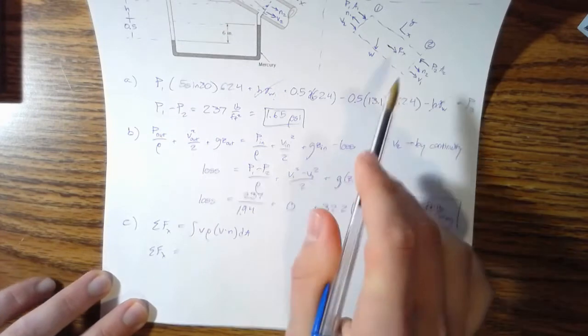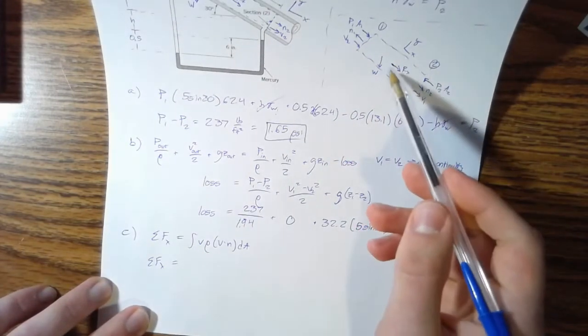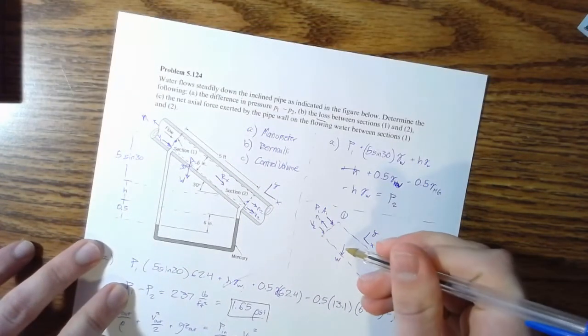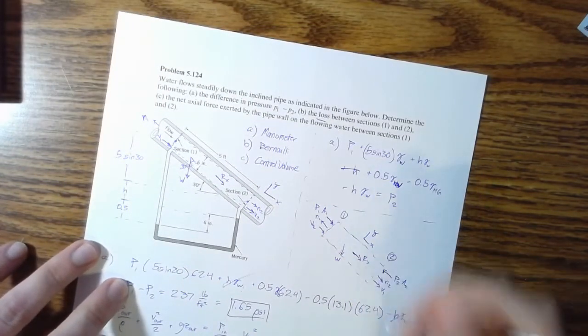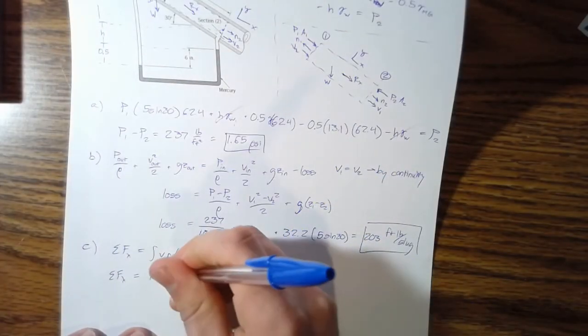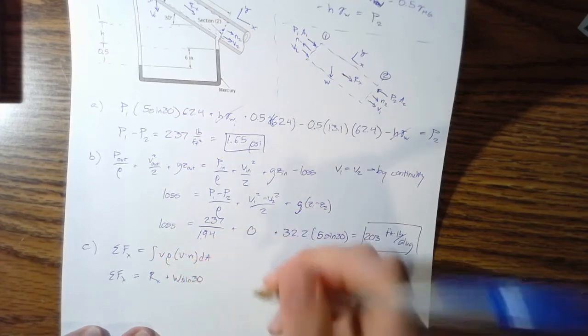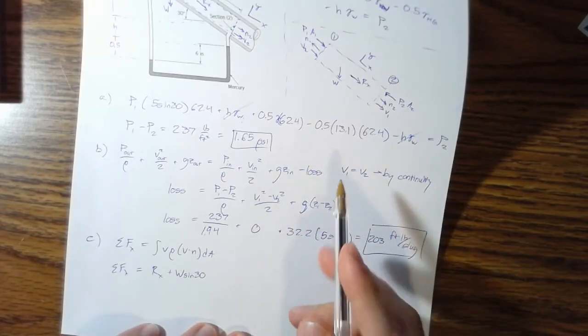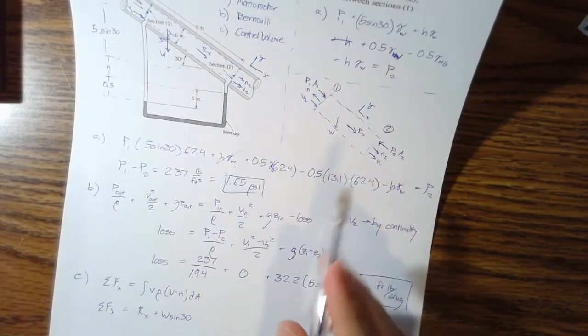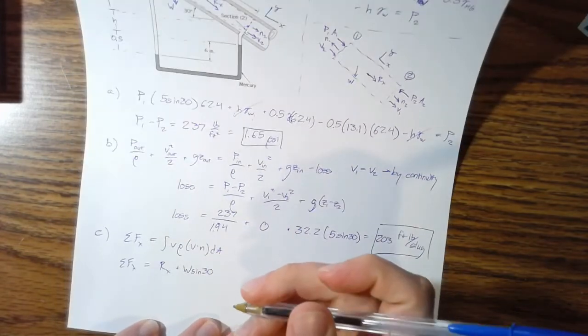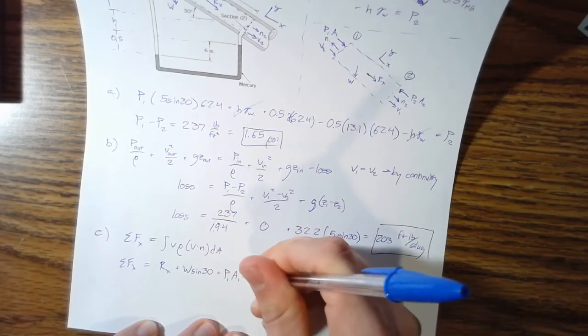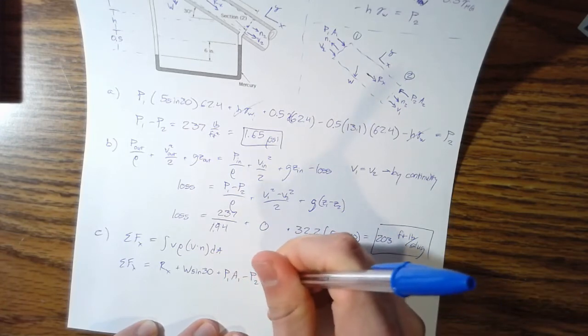So we're going to sum up all the forces and then we're going to work with the integral. So starting with the sum of forces in the X direction, right with X defined along the plane, we know we have RX. And then we have some component of this weight along that X axis. And that's going to be a positive W times sine of 30. And then we have these P pressure times area vectors here and here. Both of those are forces. So we have, plus pressure one times area one, and then minus pressure two times area two.